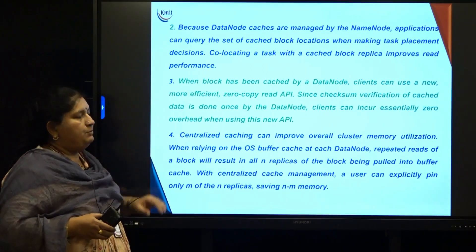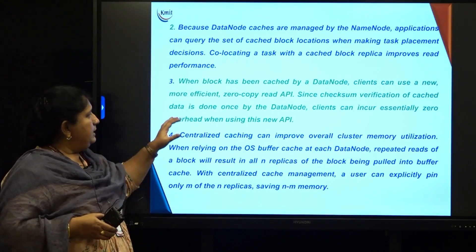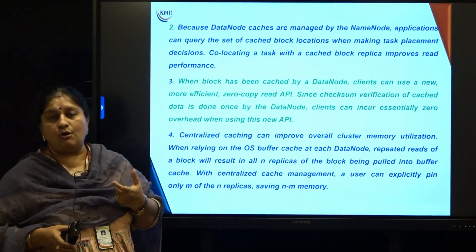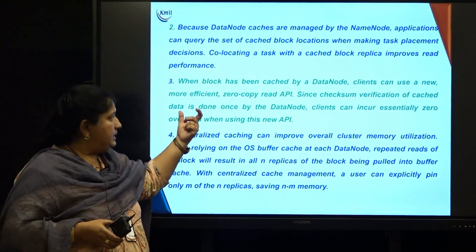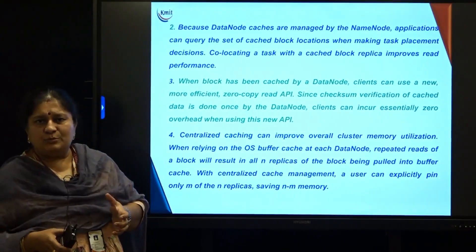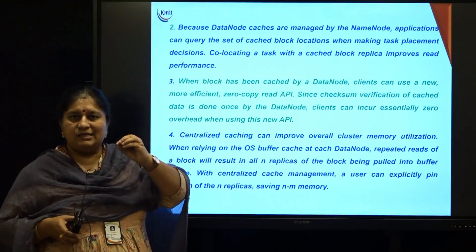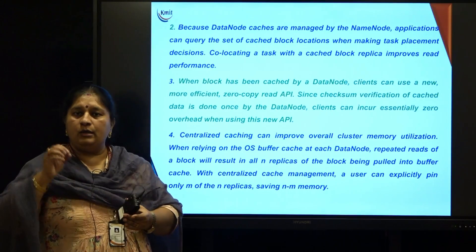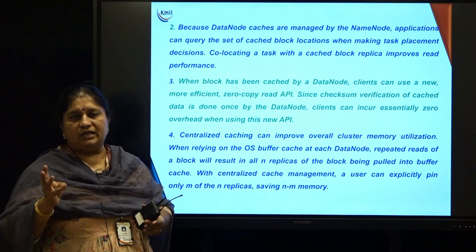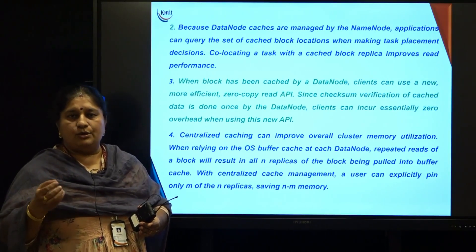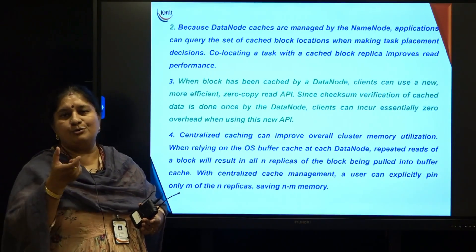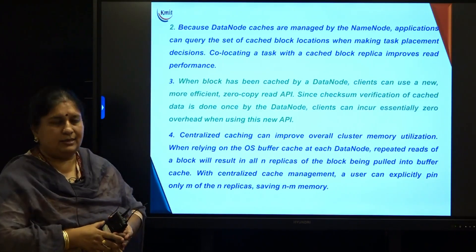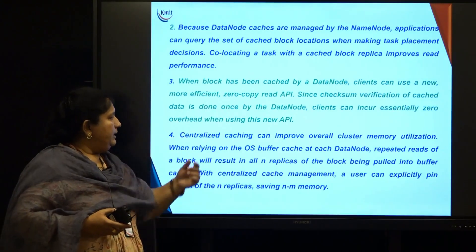When a block has been cached by a data node, clients can use a new principle called the zero copy read API. What is this? The block is already available in the cache memory of the data node. When the data node first downloads or loads the block, checksum verification and all related steps are already completed. So for subsequent reads, there is no need to redo checksum verification, thereby saving performance time. We call this the zero copy read API.